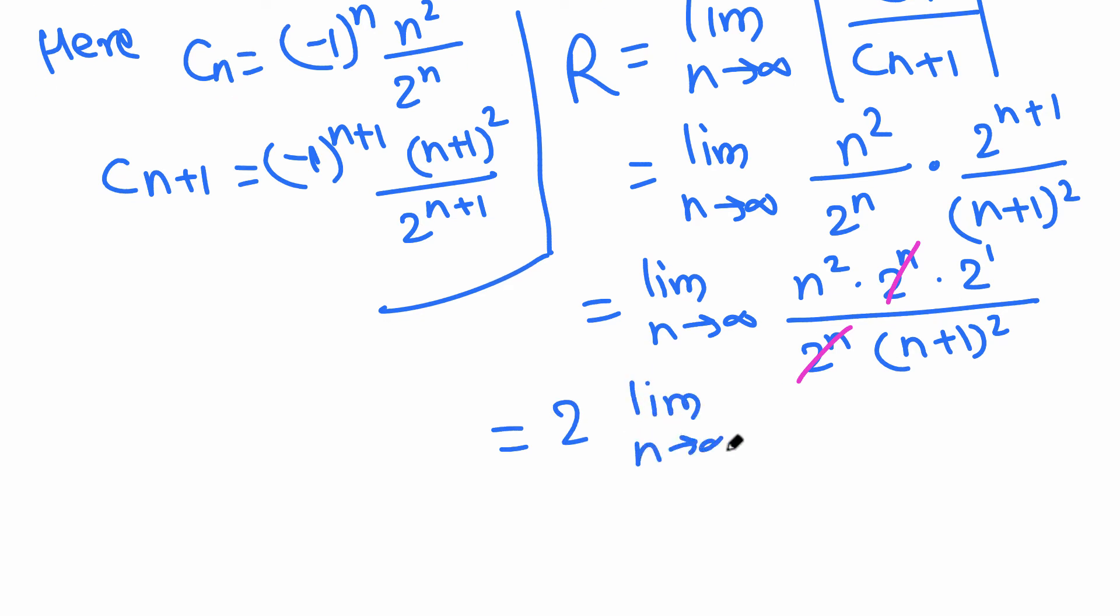So this limit, 2 to the 1 is 2, which is independent of n, so we can pull it all the way outside. The limit as n goes to infinity of n squared over n plus 1 squared, which is 2 times... If we expand on the bottom, n plus 1 squared is just n squared plus other minor terms. When n goes to infinity, the limit depends on the leading terms, so n squared over n squared is just 1. So the limit is 2.